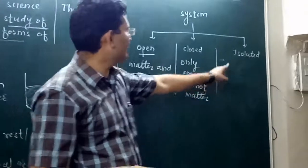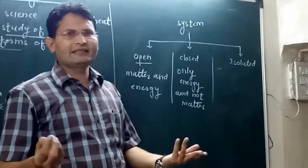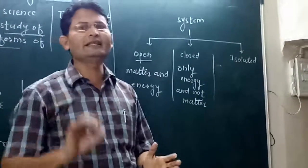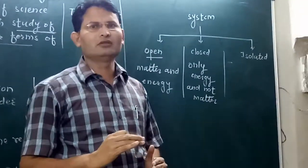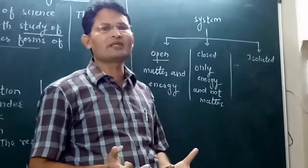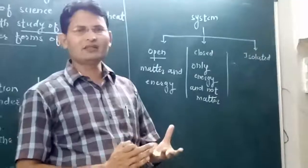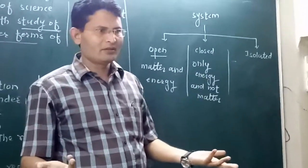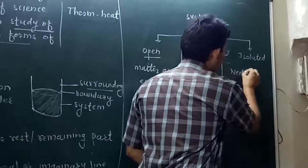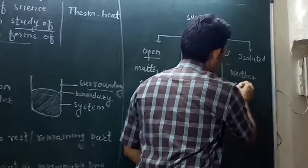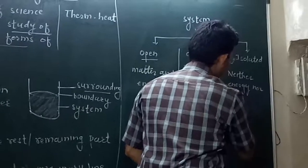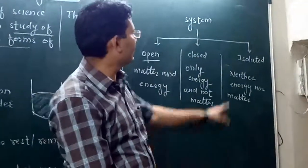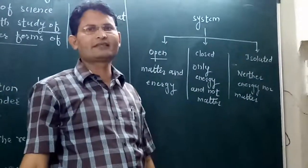Another example is isolated system. Let's say a thermos with hot tea. After a span of time, the temperature remains constant. This means neither matter nor energy is transferred. This kind of system is called isolated system.